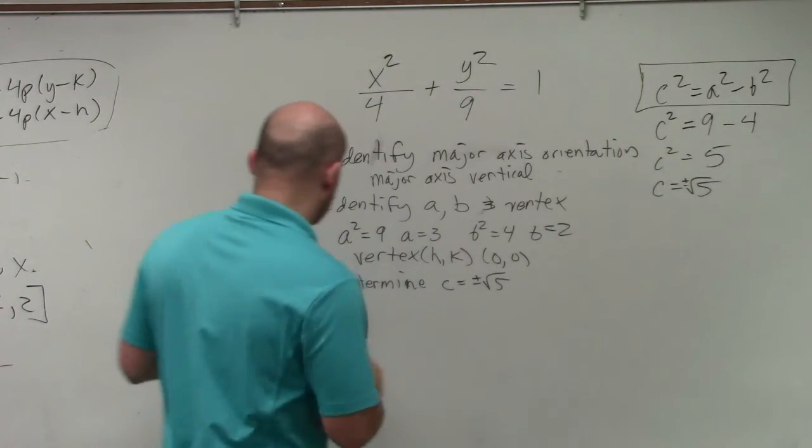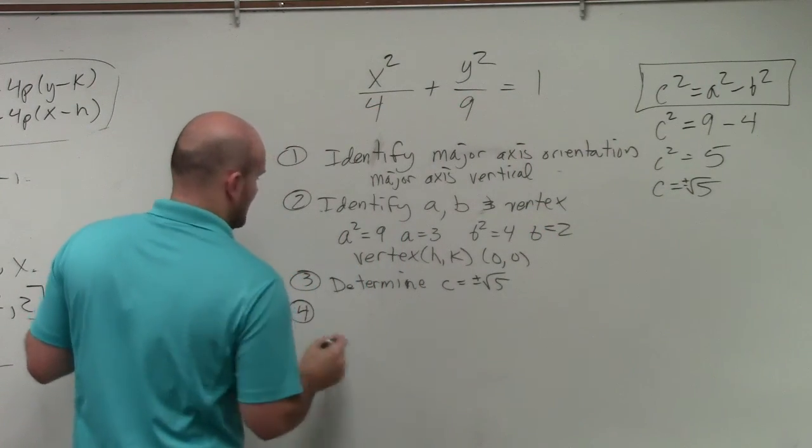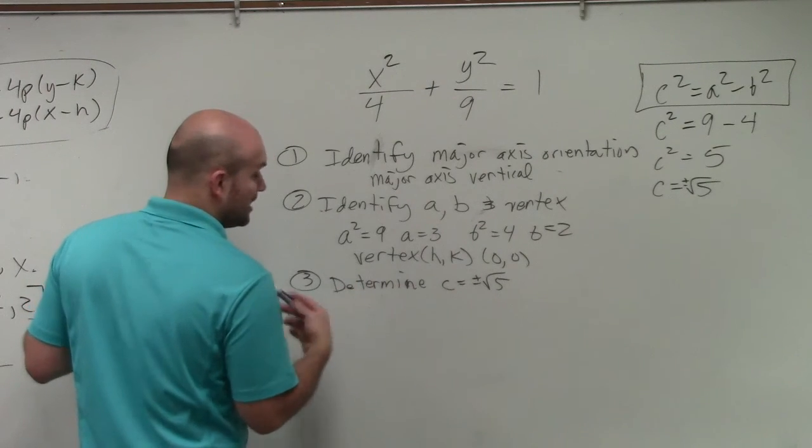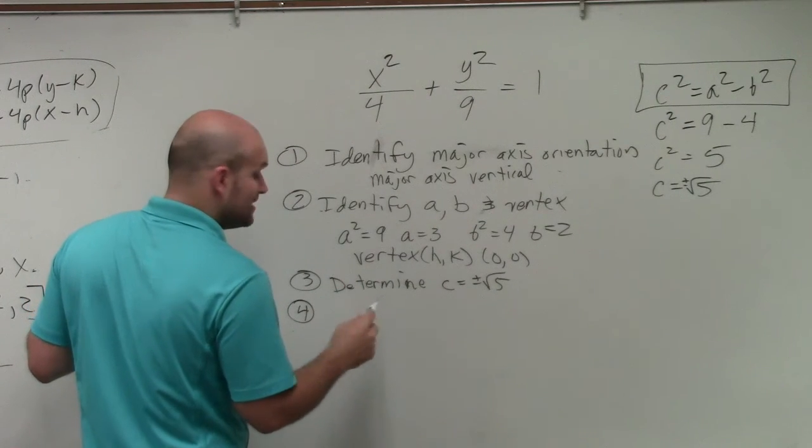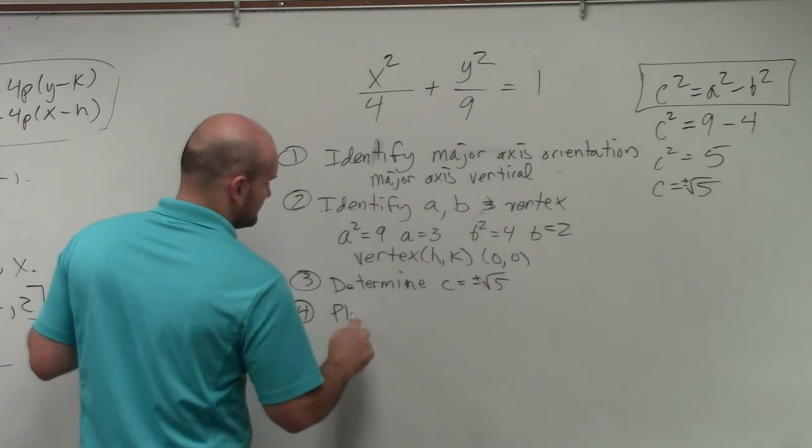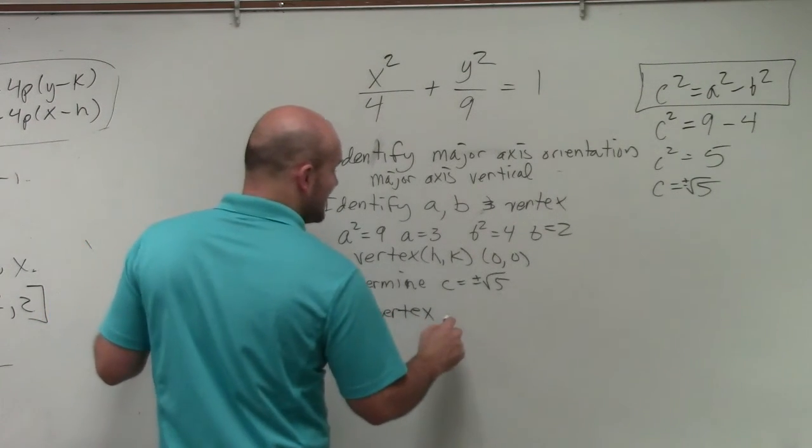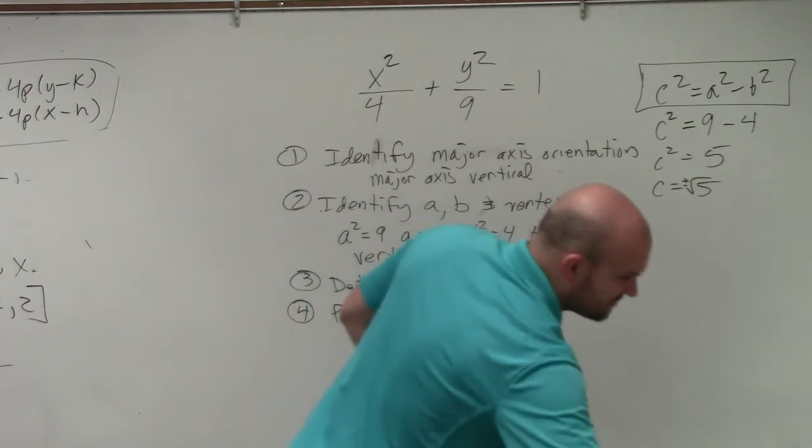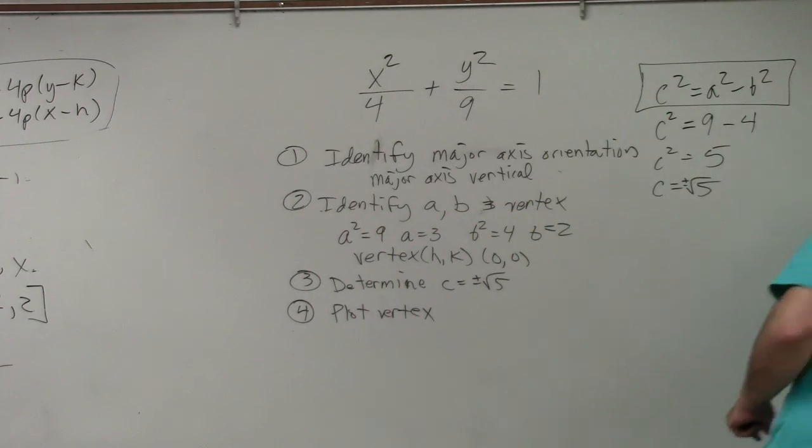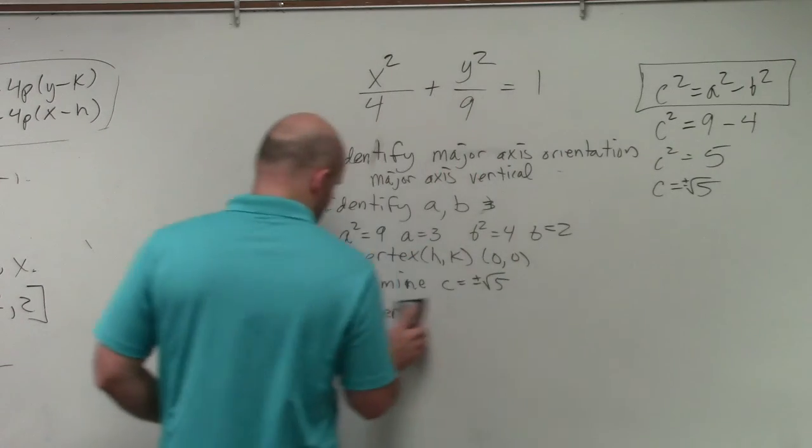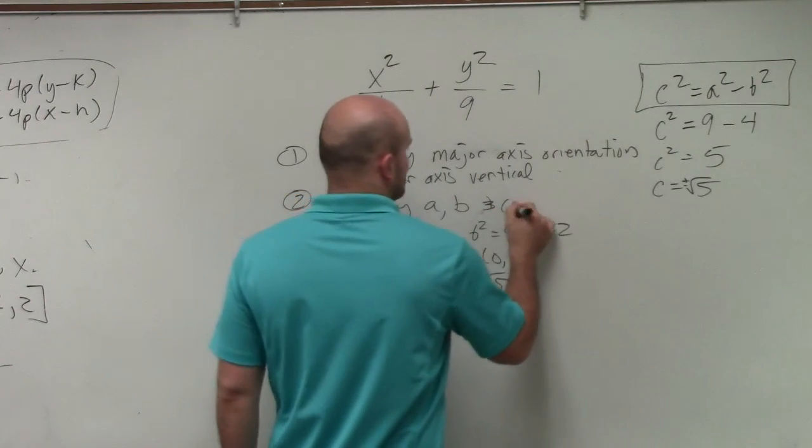OK. And then step number five is I think it's helpful to plot the information to find them. You don't have to technically do this one. Plot the center. Did I write vertex up there? Yes, I did. We don't have a vertex. We have a center, right? I always.